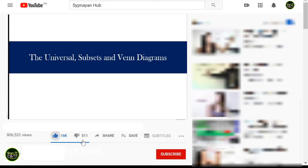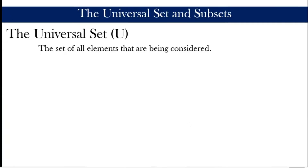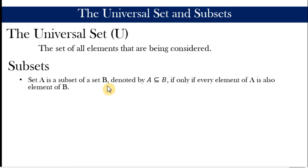The universal set is the set of all elements that are being considered, so it is us who decides what our universal set is. The symbol for the universal set is the capital letter U. Subsets, on the other hand, describe a relationship between two sets.